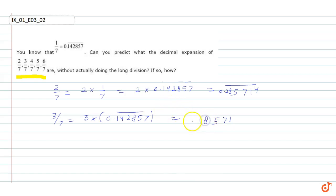This is 8 and this is 42, so this is 0.428571 bar. 4/7 is equal to 4 times 1/7 bar. So 4 into 0.142857 bar. When we multiply this by 4, this is equal to 0.571248.